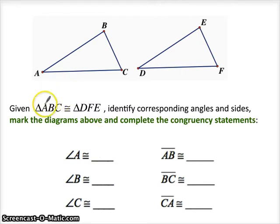There's this pairing up of first letter, second letter, third letter. Just by knowing this, I don't even need to look at the picture to fill these out. If triangle ABC is congruent to triangle DFE, I know that angle A is congruent to angle D, angle B is congruent to angle F, and angle C is congruent to angle E.